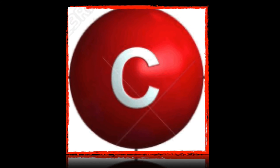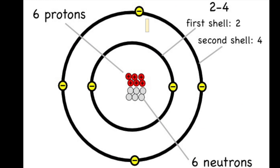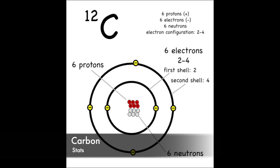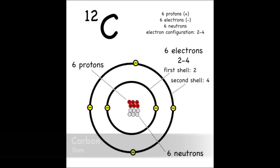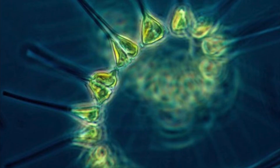Life is all around us, and carbon makes life. Carbon is important — it has four valence electrons that move around its nucleus. Because of its chemical properties, it can make carbon chains that make a variety of organic molecules, which make life.